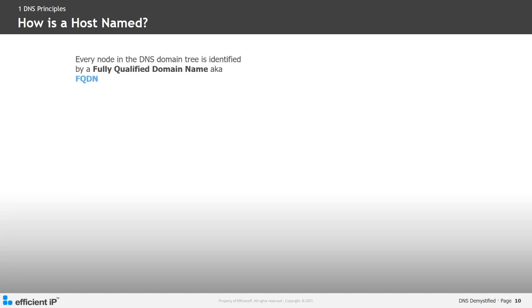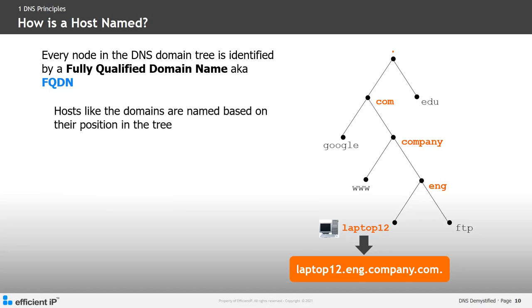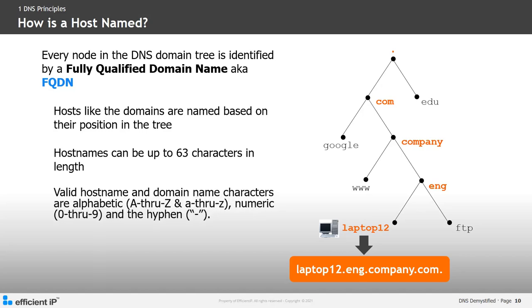Every node in the DNS tree is identified by a fully qualified domain name, or FQDN. Host names, like domains, are based on their position in the tree. Host names can be up to 63 characters in length, comprised of alphanumeric characters A through Z, either upper or lower case, numeric 0 through 9, and the special character hyphen. Although upper and lower case letters are allowed, they are not case sensitive. While a host name can be up to 63 characters in length, a fully qualified domain name can be up to 255 characters.